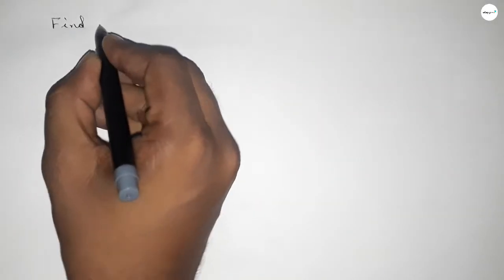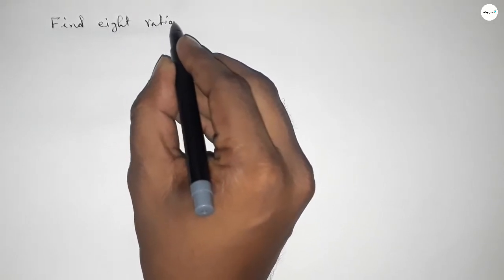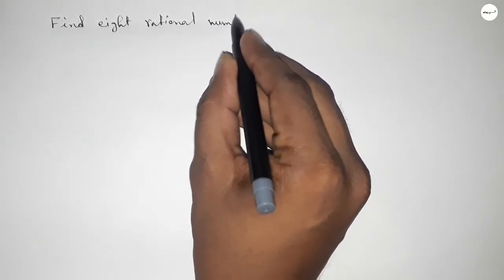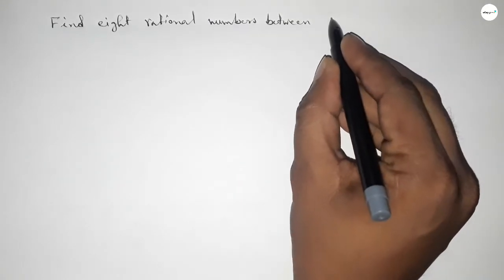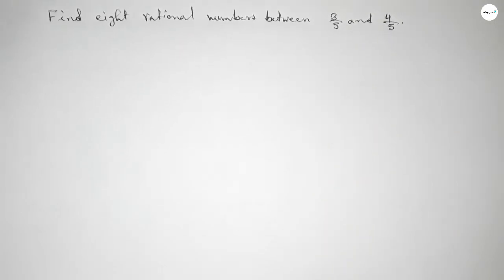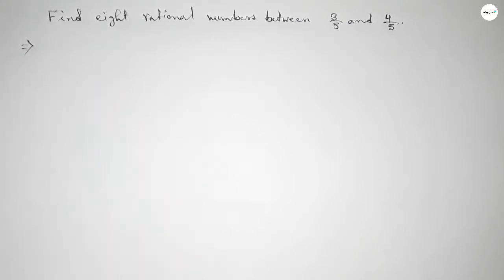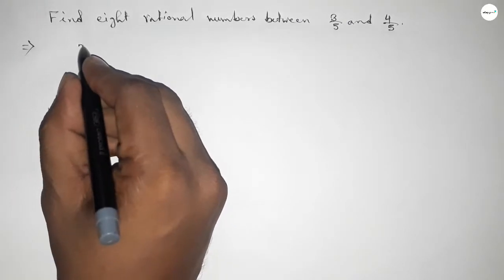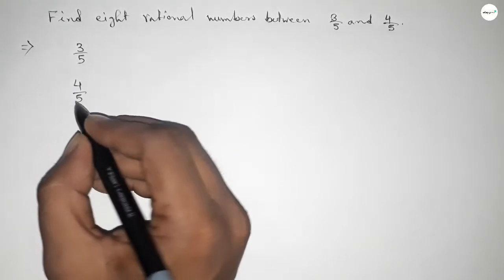Hi everyone, welcome to SHCR classes. Today in this video we have to find eight rational numbers between 3 over 5 and 4 over 5. So let's start the video. First of all, write down here the given numbers: 3 over 5 and 4 over 5.